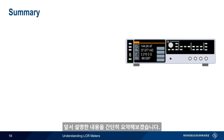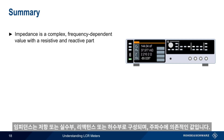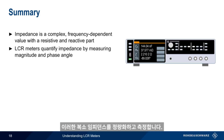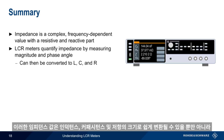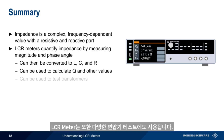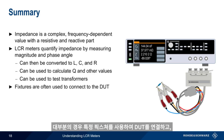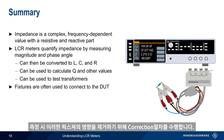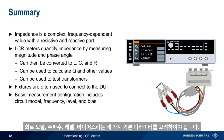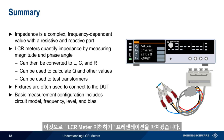In summary: impedance is a complex, frequency-dependent value consisting of a resistive or real part and/or a reactive or imaginary part. LCR meters quantify this complex impedance by measuring the magnitude of the voltage and current and the phase angle between them. These impedances can then be converted into inductance, capacitance, and resistance, as well as into other useful parameters such as the quality factor Q. LCR meters can also perform a variety of transformer tests. Special fixtures are used to connect to the device under test, and a correction or calibration routine removes the influence of the fixture from the measurement. When making measurements with an LCR meter, there are four basic configuration parameters: circuit model, frequency, level, and bias. This concludes our presentation, Understanding LCR Meters. Thanks for watching.